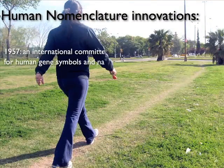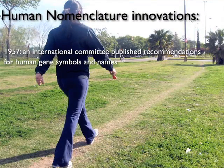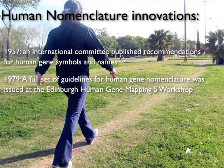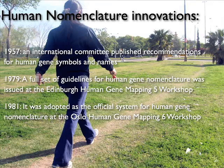In 1957, an international committee published recommendations for human gene symbols and names. A full set of guidelines for human gene nomenclature was issued in 1979 at the Edinburgh Human Gene Mapping 5 workshop, and adopted as the official system for human gene nomenclature at the Oslo Human Gene Mapping 6 workshop in 1981.